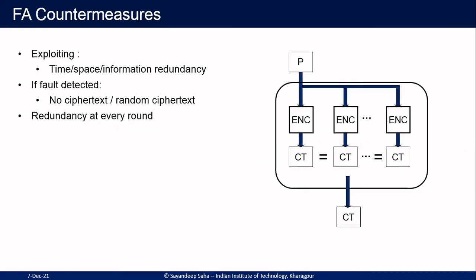Talking about fault attack countermeasures, the main theme is redundancy. In simpler words, the computation is performed several times, and if the results agree with each other, then only the ciphertext is outputted; otherwise it is muted or randomized. Such redundancy can be implemented at finer grain — for every round, for every S-box operation — but the main idea is the same for everything.